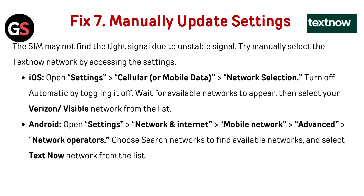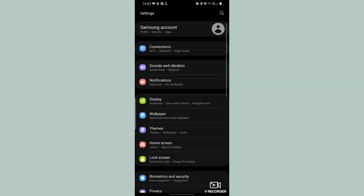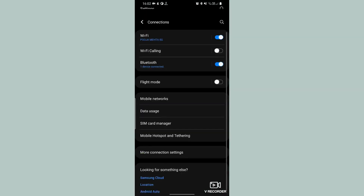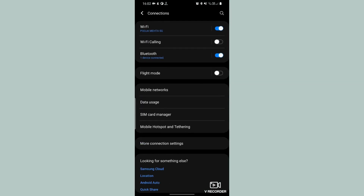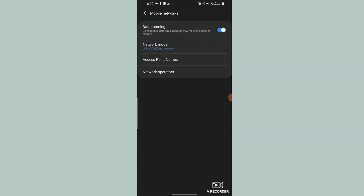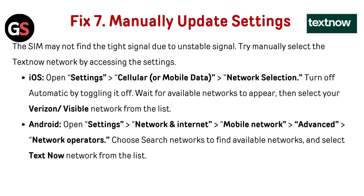Fix 7 — Manually Select Network: The SIM may not find the right signal due to an unstable connection. Try manually selecting the TextNow network. For iOS: go to Settings → Cellular or Mobile Data → Network Selection → turn off Automatic, wait for available networks, then select Verizon or Visible from the list. For Android: go to Settings → Network and Internet → Mobile Network → Advanced → Network Operator → Search Networks, then select TextNow from the list.